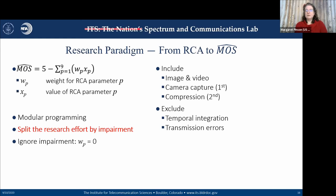I'm dividing and focusing first on camera capture and then on compression. This sounds backwards because compression artifacts are much more of interest to broadcasters. The problem I ran into is that until we can detect, analyze, and understand camera capture problems with this no-reference philosophy, it's just not possible to detect compression artifacts — we keep getting fooled by camera artifacts and aren't able to separate them out. I'm also excluding temporal integration and ignoring transmission errors, where network metrics already do a fine job analyzing the impact of packet loss, jitter, and so on.